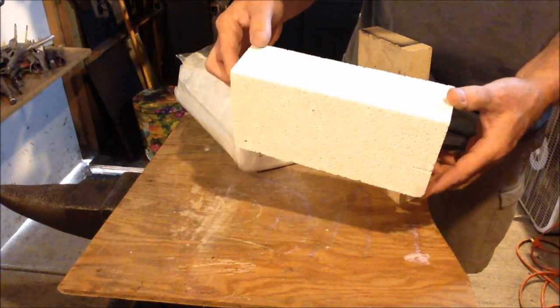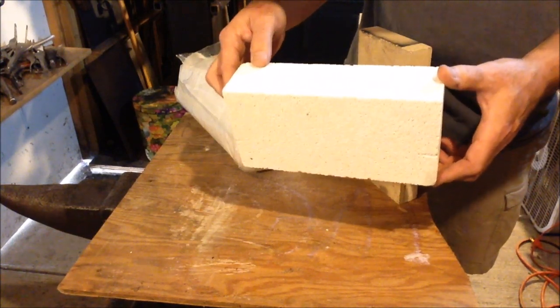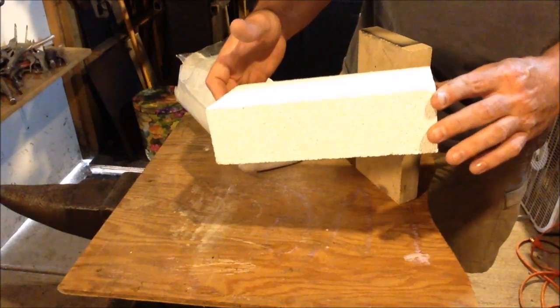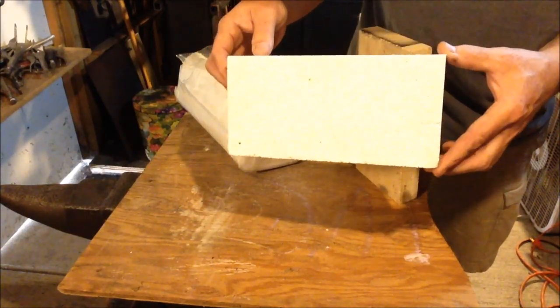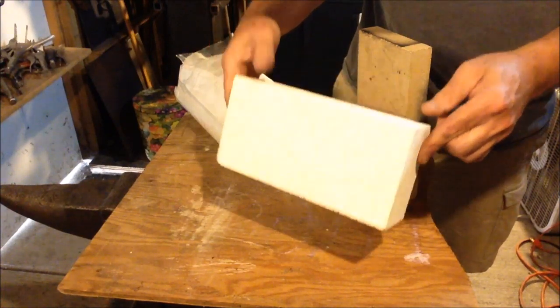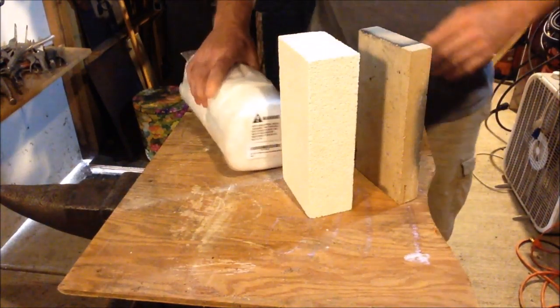The second choice I looked at were these ceramic insulating fire bricks. These are soft, they're light, they're made out of ceramic. You can cut these with any woodworking tools. Very easy to cut and they're good up to about 2,600 degrees Fahrenheit.